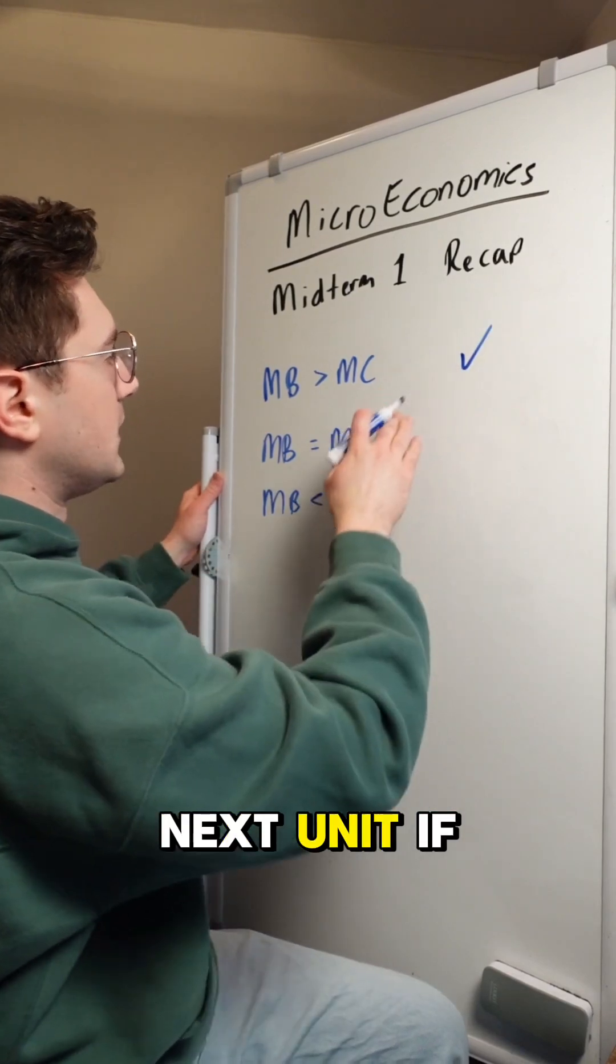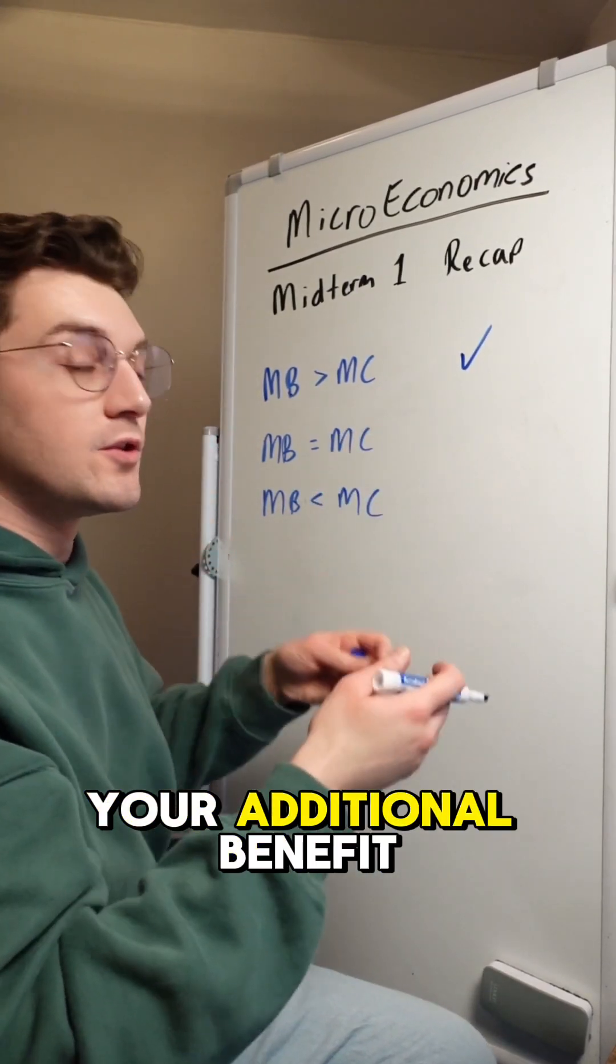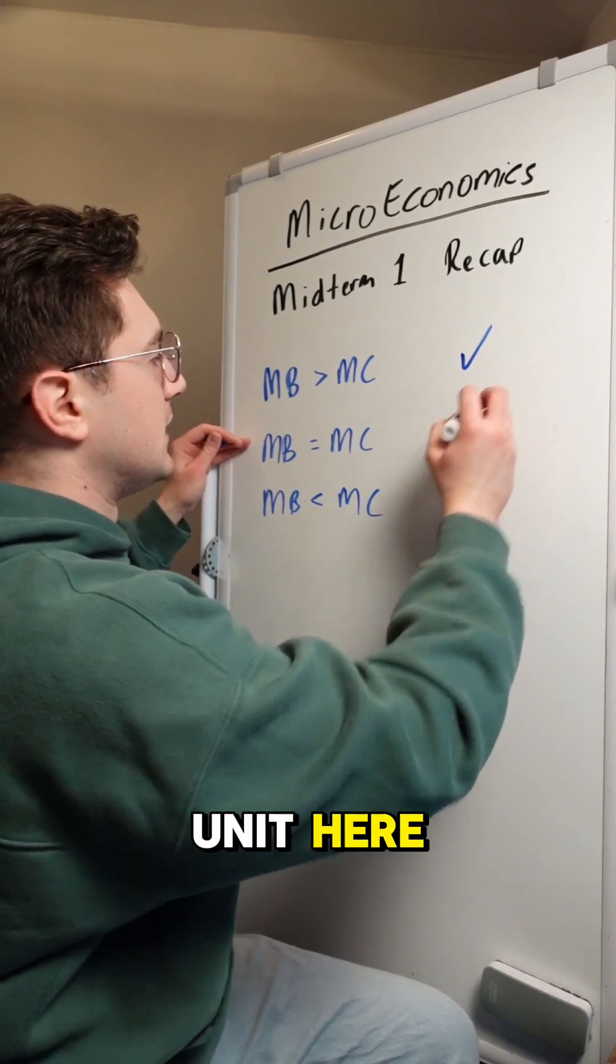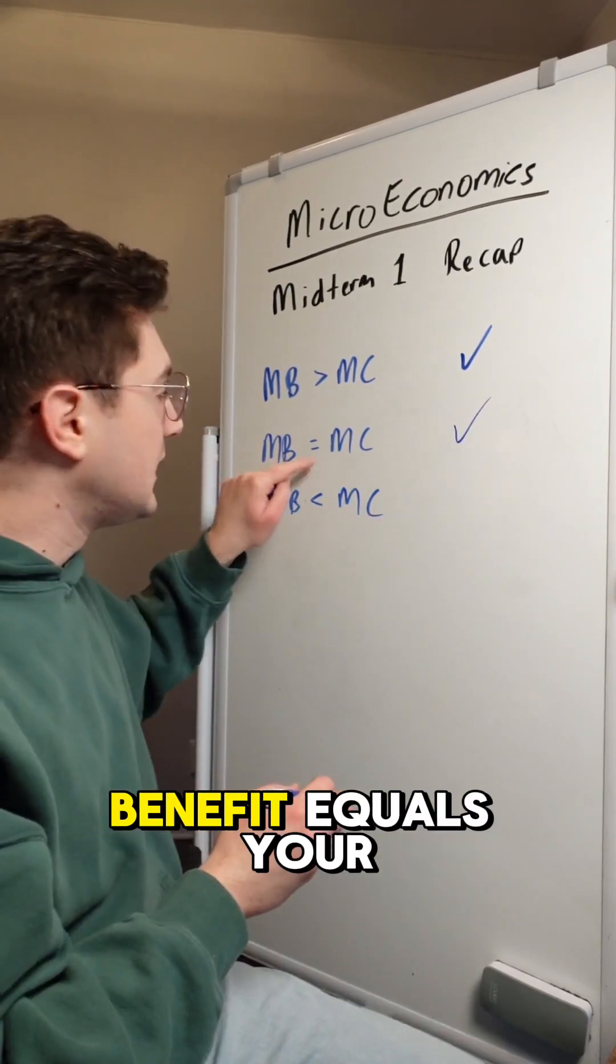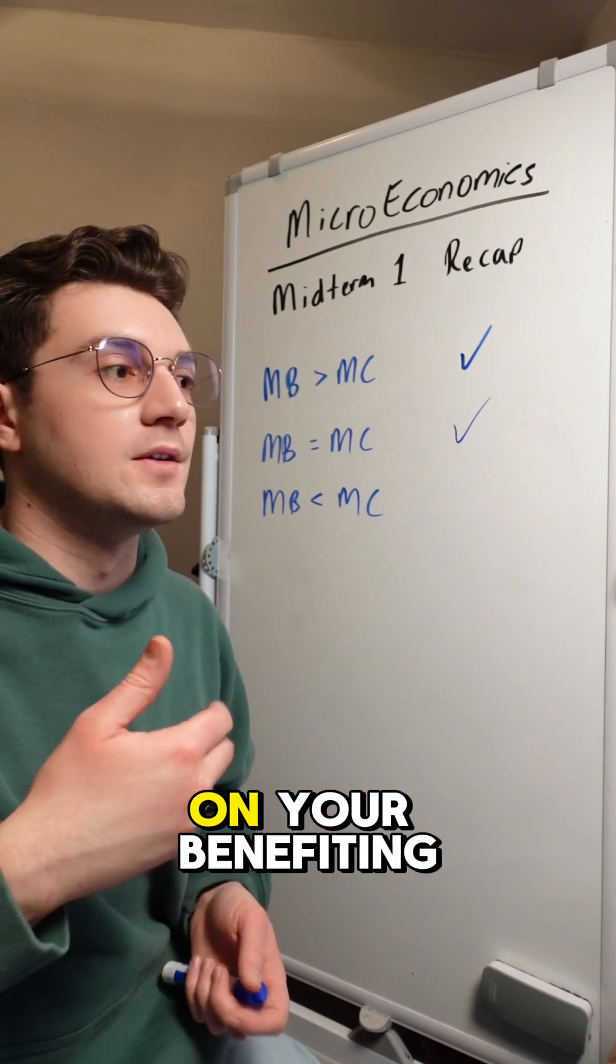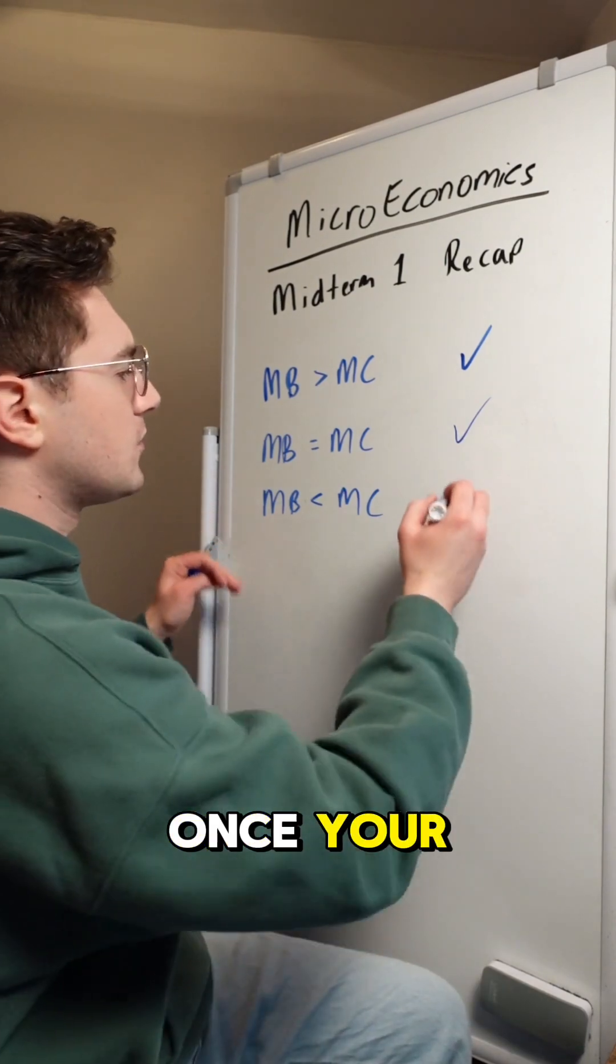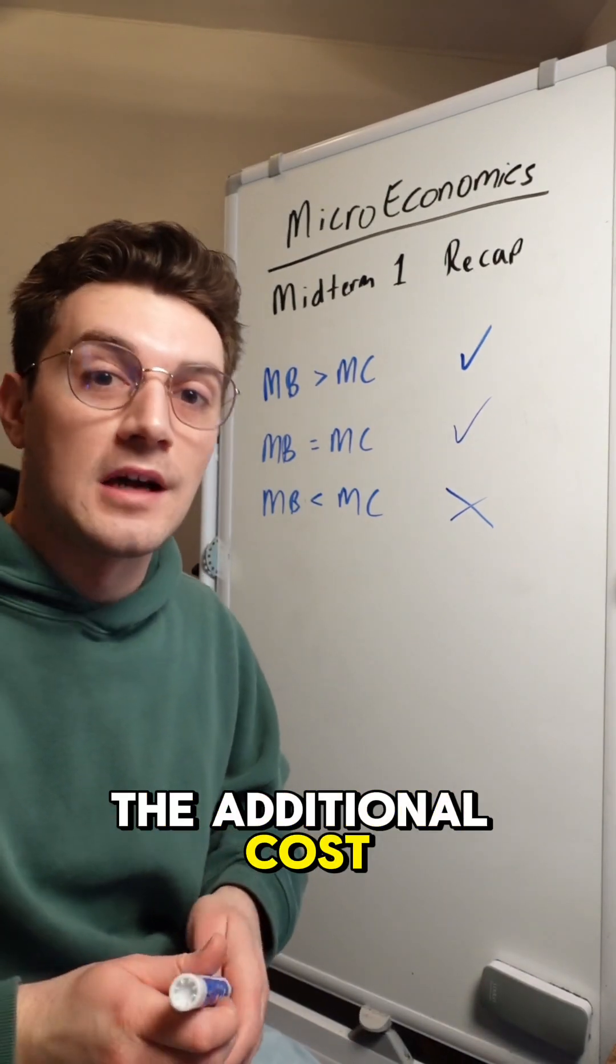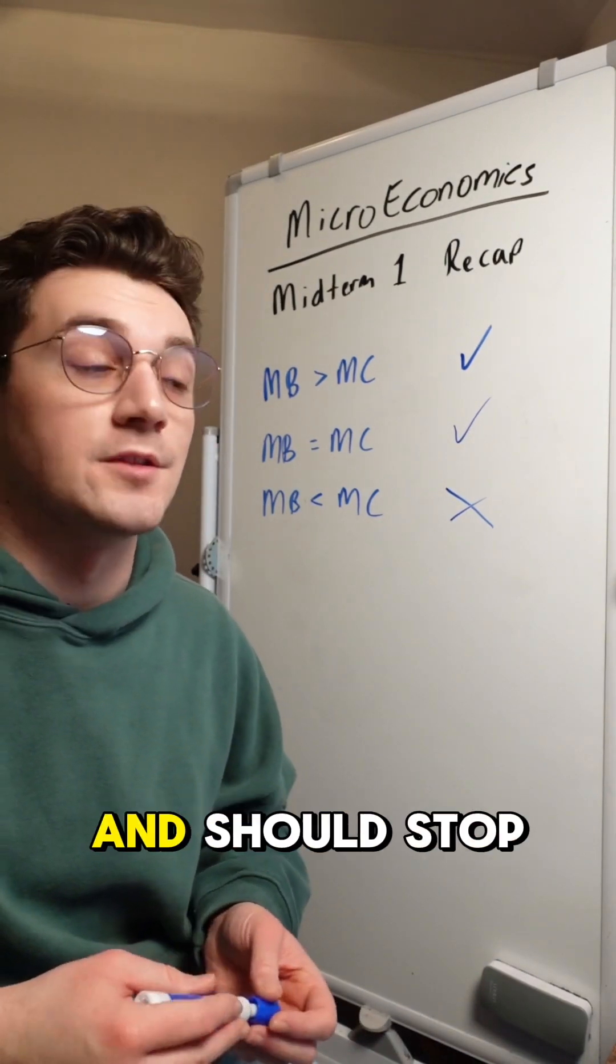You'll consume the next unit if your marginal benefit, your additional benefit, outweighs your marginal cost. This will be your last unit where your marginal benefit equals your marginal cost, because that's the number of units at which you're basically breaking even on your benefit and costs. Once your additional benefit from consuming units is less than the additional cost, you're not going to consume those units and should stop.